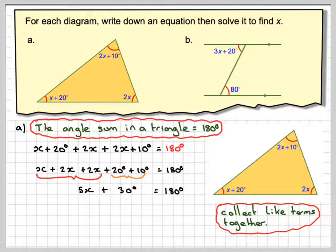The opposite of adding 30 is to take 30 from both sides, so that will leave 5x on this side, and then 180 minus 30 gives 150.